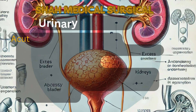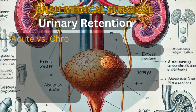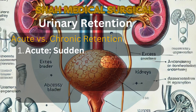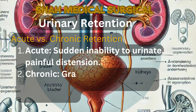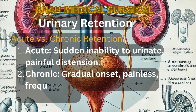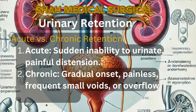Urinary retention is categorized into two types. First, acute retention: this involves sudden, painful inability to urinate. Second, chronic retention: this is a more gradual onset, with painless, frequent small voids or overflow incontinence.